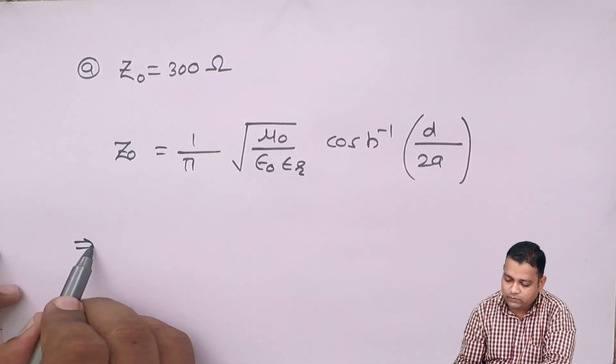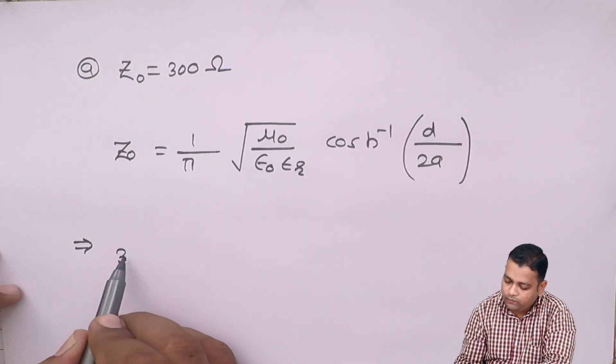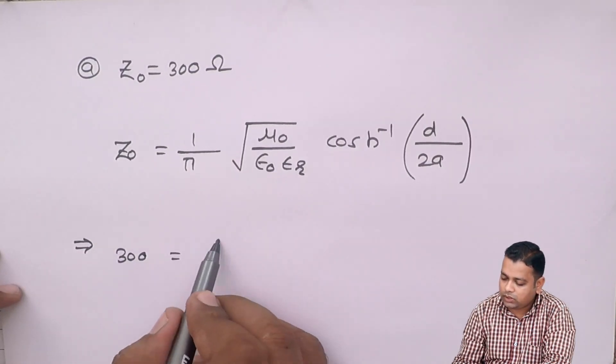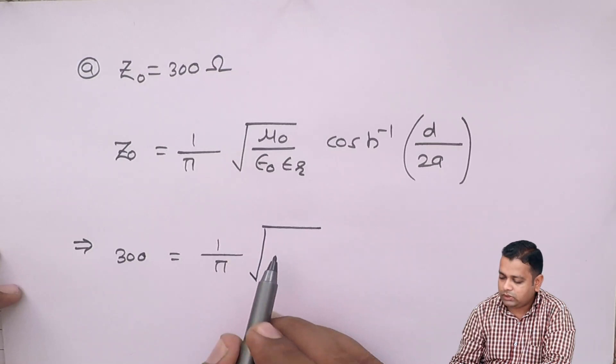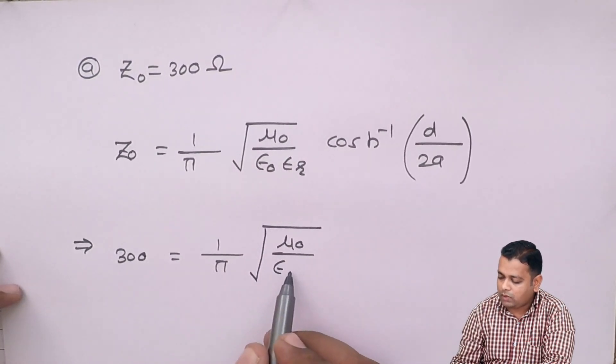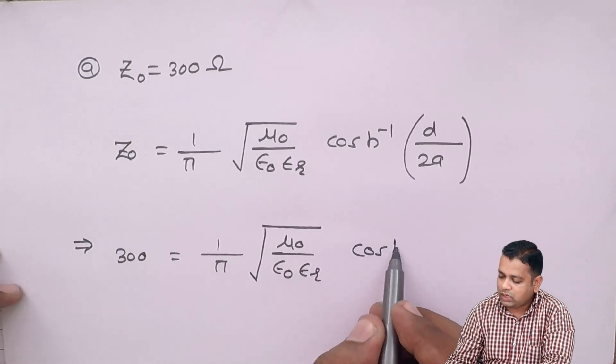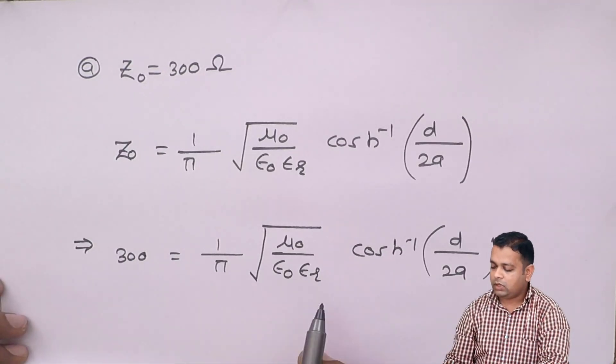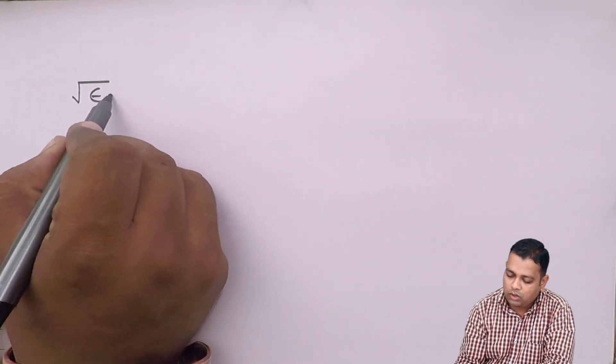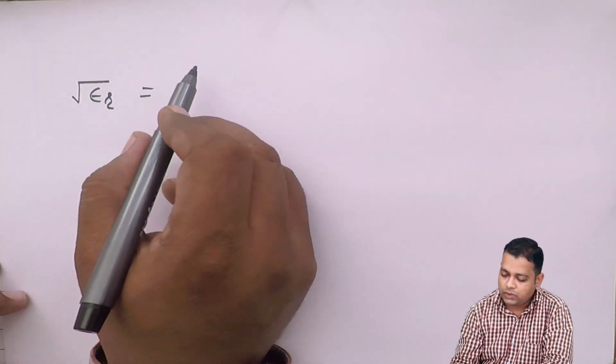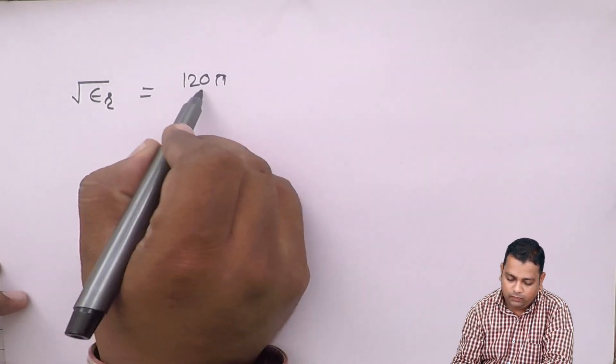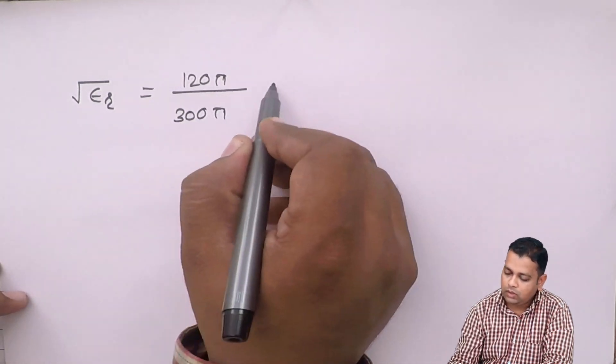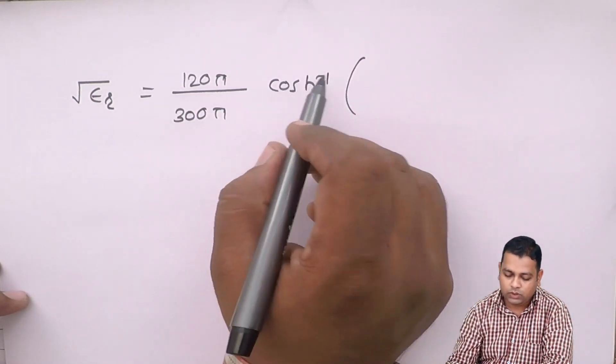This implies 300. Substituting 1 upon pi, we have mu0 divided by epsilon0 into epsilon_r cosh inverse d upon twice a. From this particular relation, we want the value of epsilon_r. To determine the value of epsilon_r, we can get it on to the left hand side. As it was in the square root, we write under root epsilon_r.